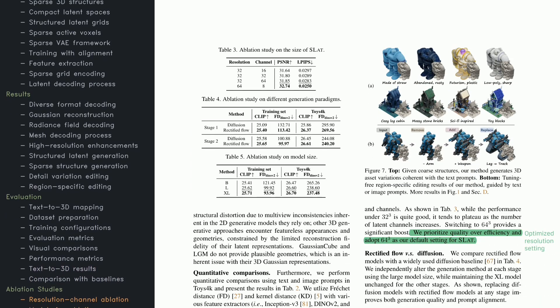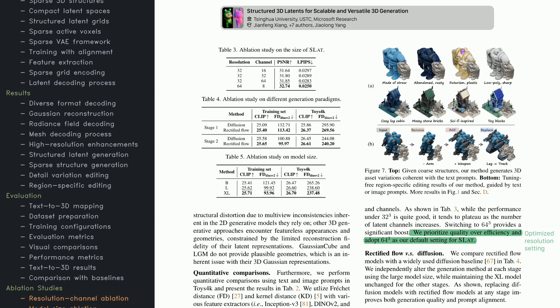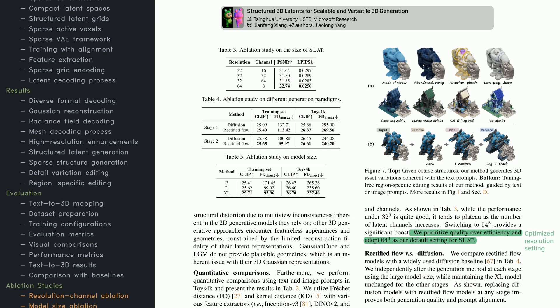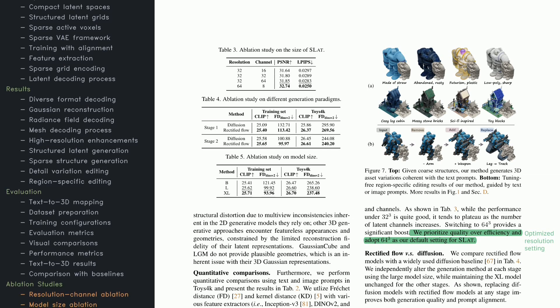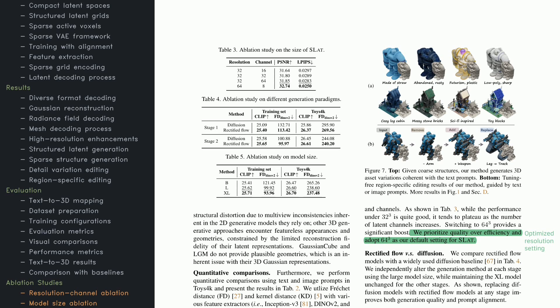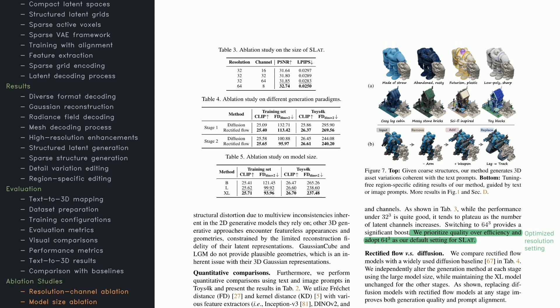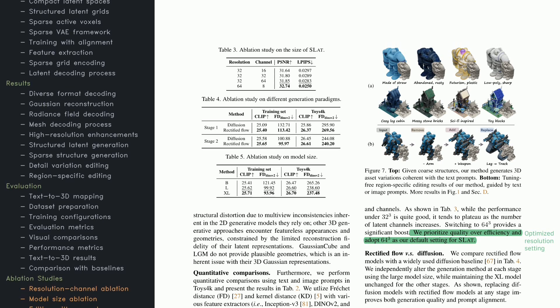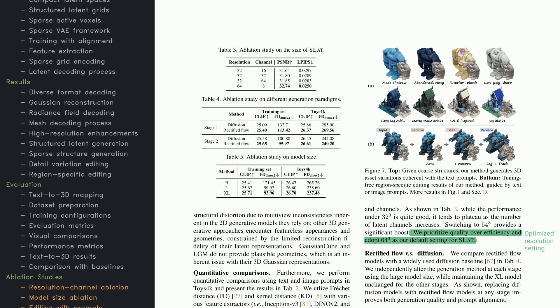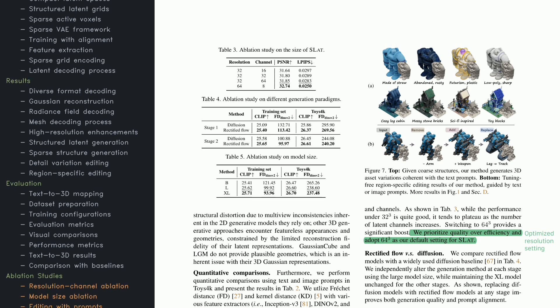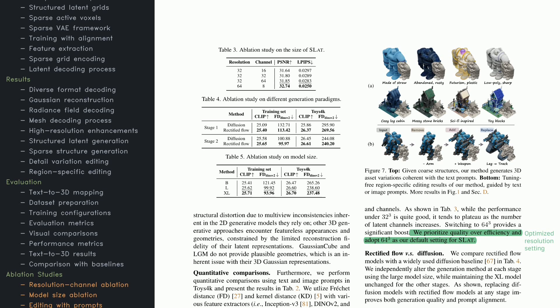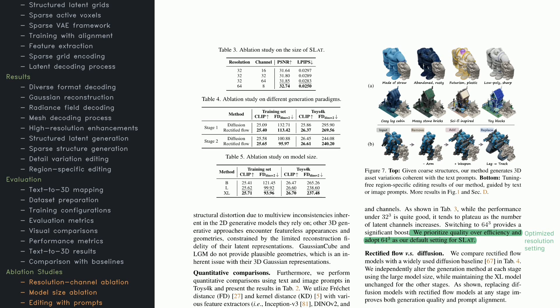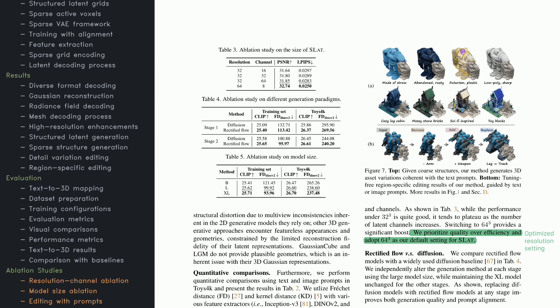Curious about how different design choices affect performance? Check out these ablation studies. They investigate factors like resolution and channel size, revealing that higher settings boost reconstruction quality but also increase computation. Another comparison looks at two stages in the method: rectified flow versus diffusion-based generation. Rectified flow shows benefits in detail, fidelity, and efficiency. Bigger models also yield better outputs. You can see various 3D asset variations, like edits that remove arms or replace legs with tracks.